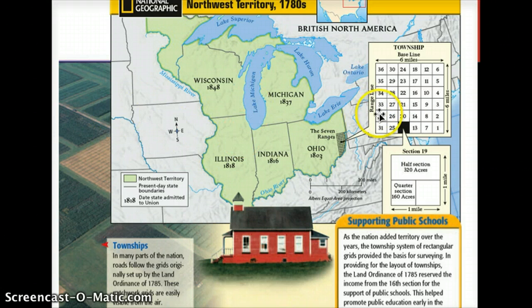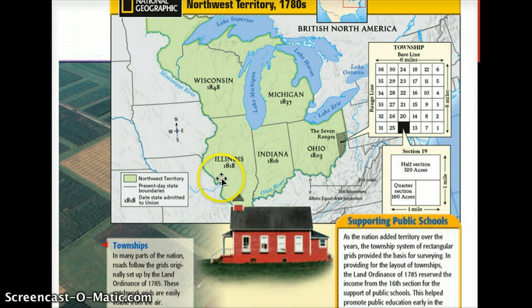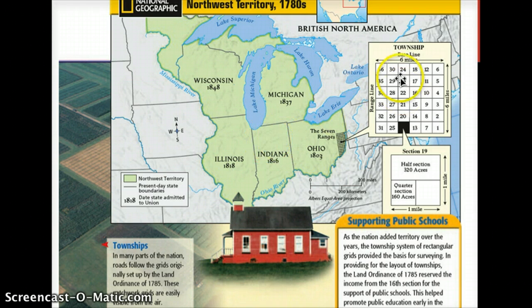Every so many parcels of land, they would establish schools and churches. This is why when you fly over these states, you look down and it looks like a giant grid — because it literally was gridded out to determine who could get what land.